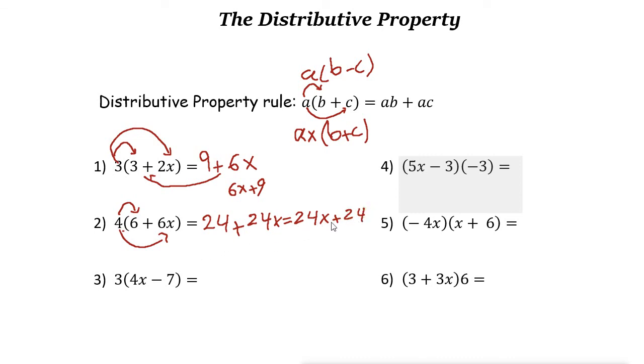So 24x + 24 is the answer. Next one: 3 times 4x is 12x. Now here we have the sign negative or minus, we put minus. 3 times 7 is 21, so the answer is 12x - 21.